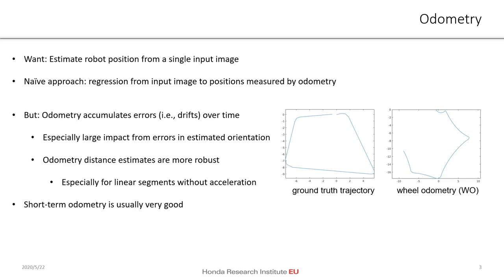On the right you see some examples. We show the ground truth trajectory on the left part and on the right the estimated naive wheel odometry. Anyhow, it's worth noting that the short-term odometry is usually very good.